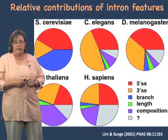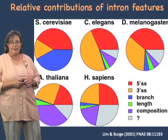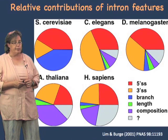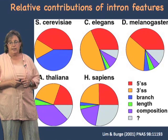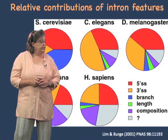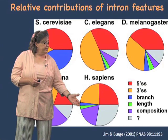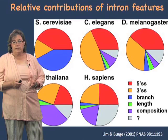From the same paper, here is a graph showing the relative contributions of intron features to intron recognition in different organisms — the same organisms we looked at before in terms of gene count, intron count, and complexity. In S. cerevisiae, all of the information comes from the 5' splice site, the 3' splice site, and the branch site consensus sequences. But in humans, only about half of the information needed to specify an intron comes from those three consensus sequences. Some of the remaining information comes from intron length and base composition, which differs somewhat from exons.